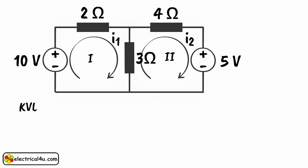Putting these values in equation 1 and 2, we get 10 minus I1 into 2 minus (I1 minus I2) into 3 equals 0. Let's say this is equation 3.